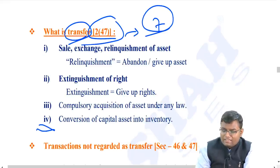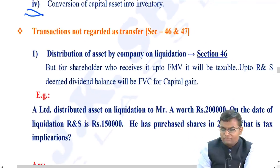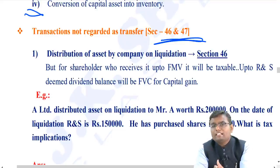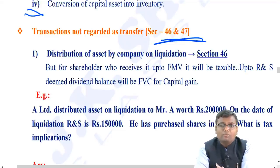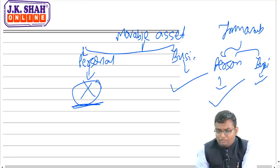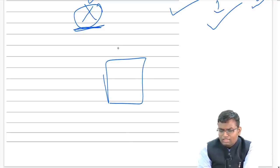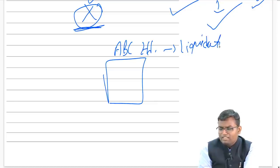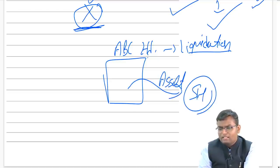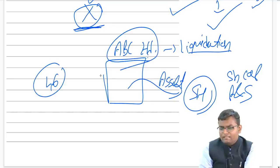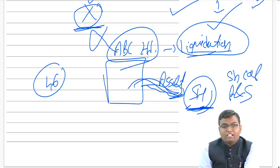Certain transactions are never regarded as transfer under Section 46 and Section 47. Number one: distribution of assets by a company on liquidation. When a company like ABC Limited is being liquidated, it gives assets to shareholders in exchange for their rights in share capital and reserves and surplus. Section 46 says this is not regarded as a transfer - the company is not liable to pay capital gain.